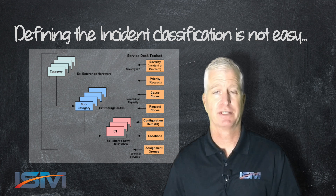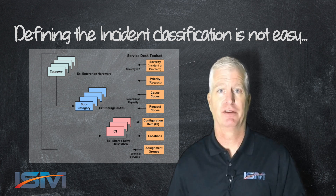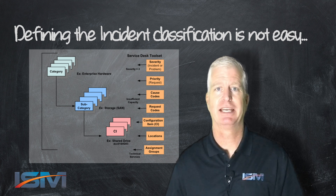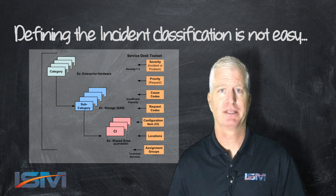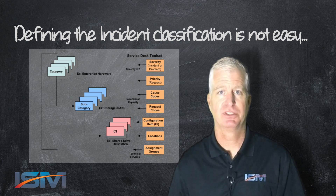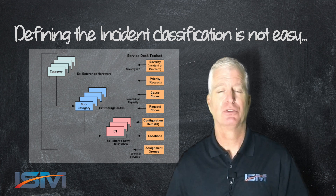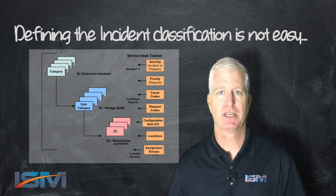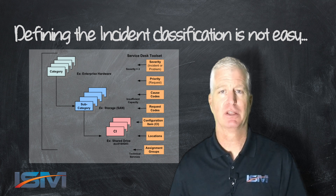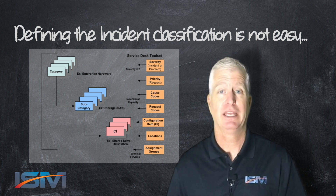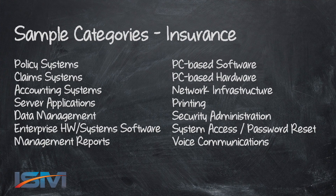Defining the classification scheme is not always easy. It takes a collaborative effort between various areas within the business to understand what's important from a reporting perspective and the methodology for routing your incidents. But if you stick with the objectives we talked about earlier, it'll make your life a lot easier. So let's spend the rest of this session giving you some examples of various category models that might help spur your thinking toward defining your own incident classification scheme.